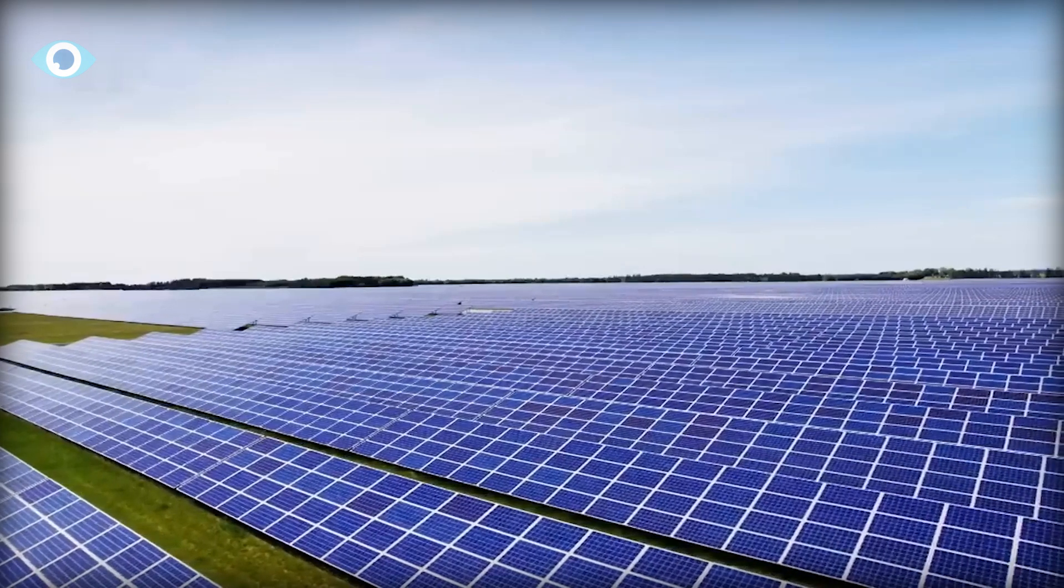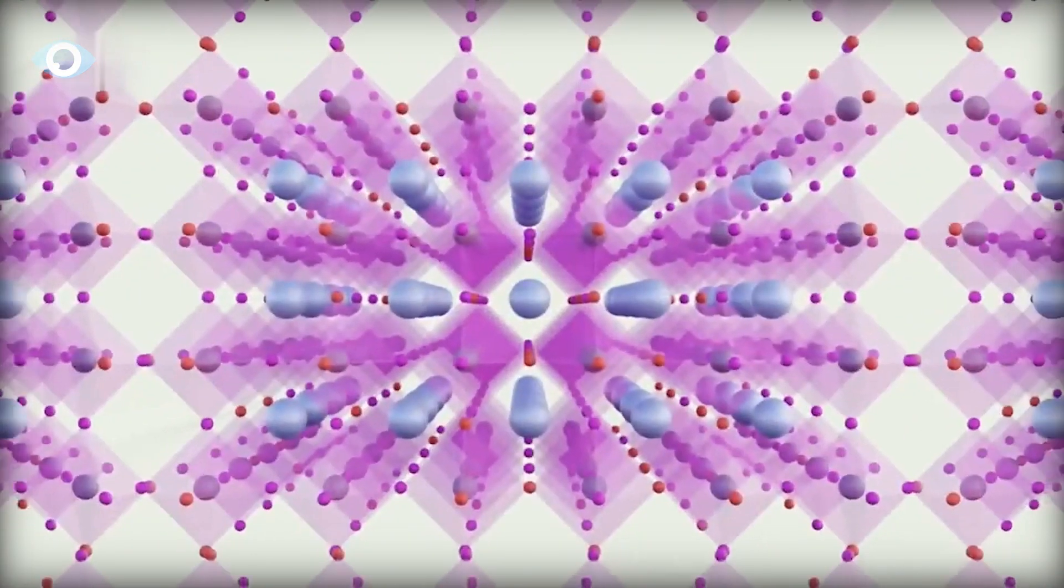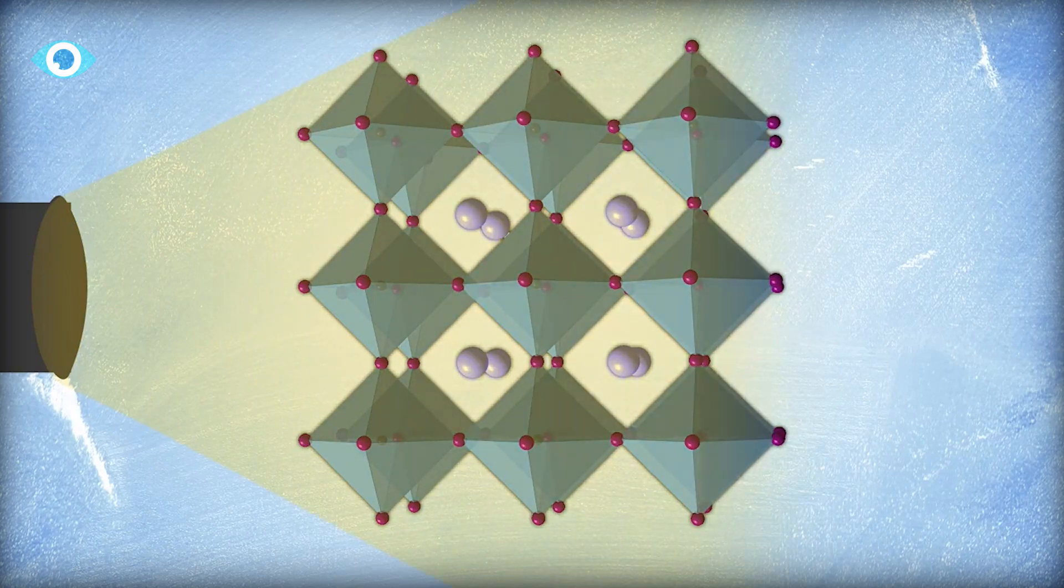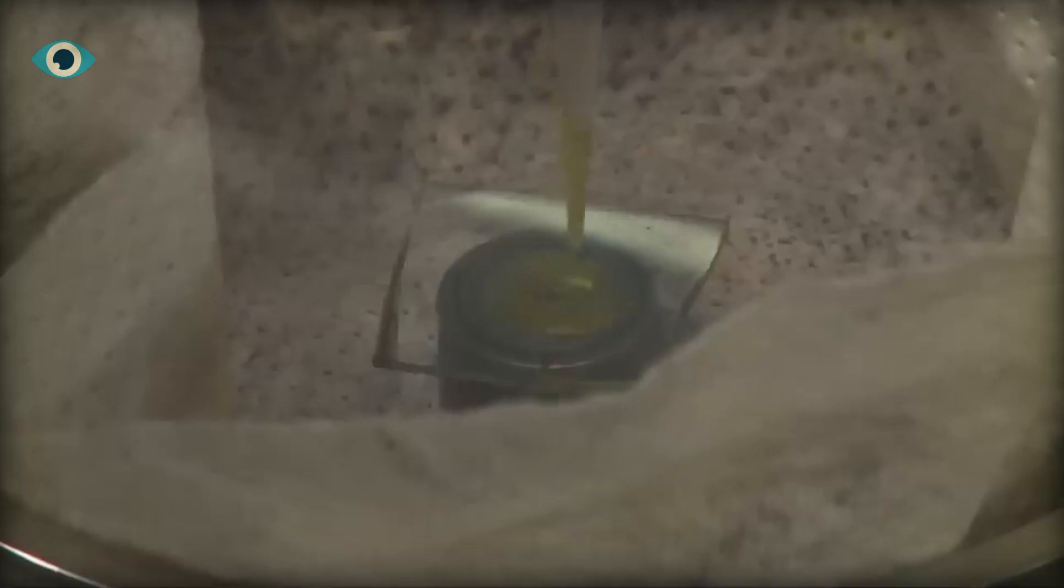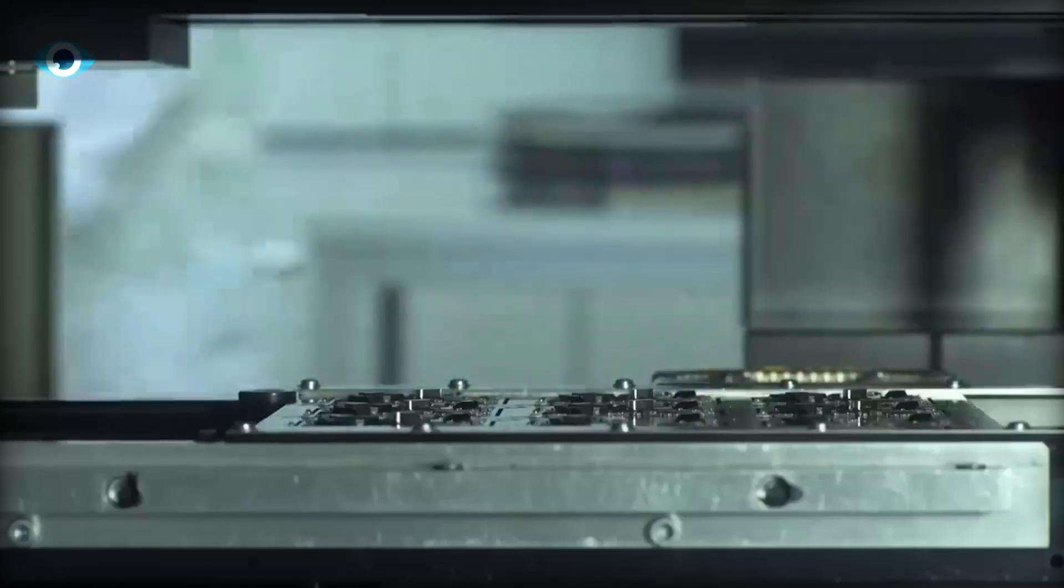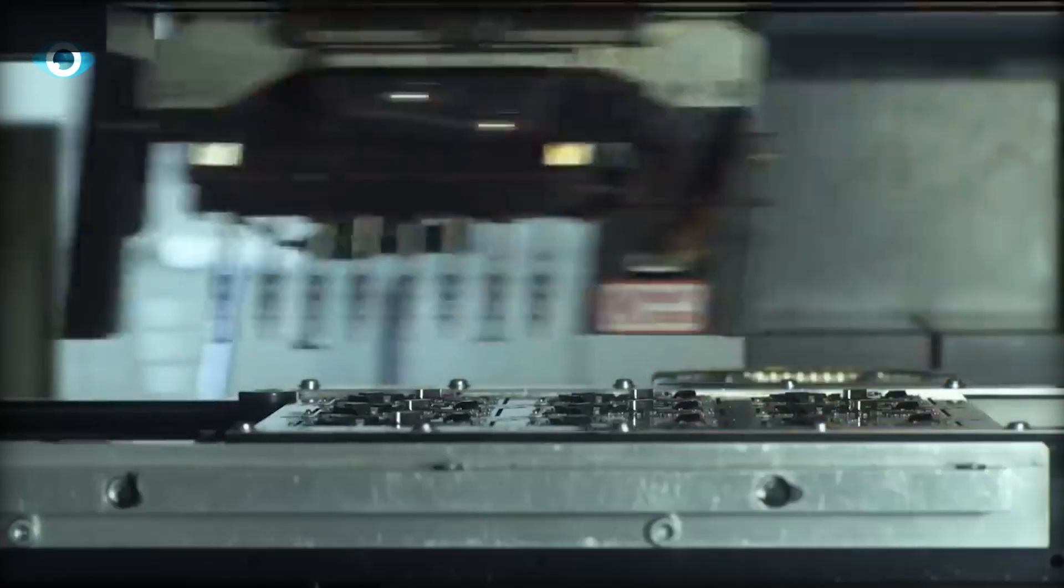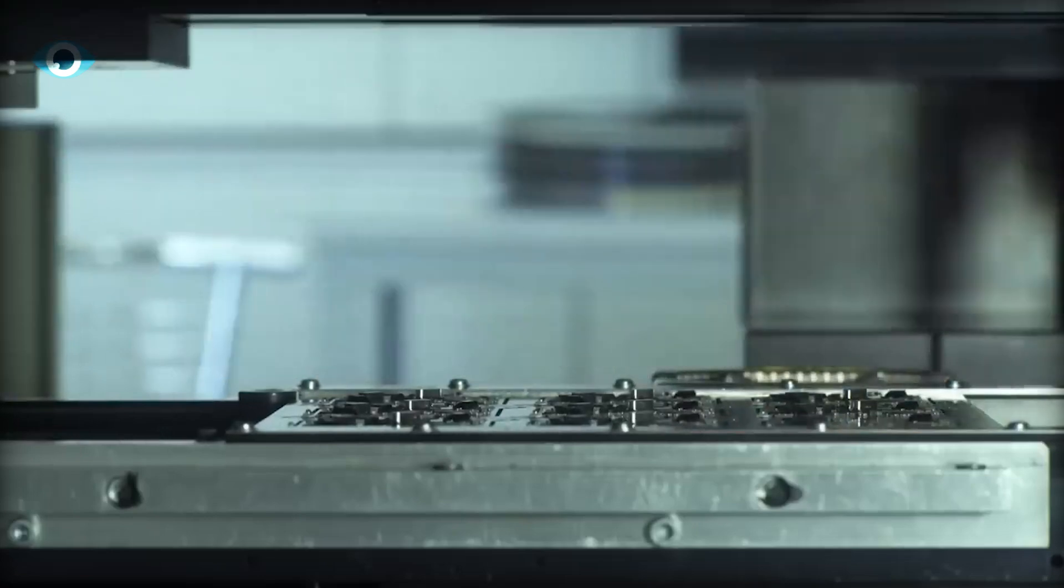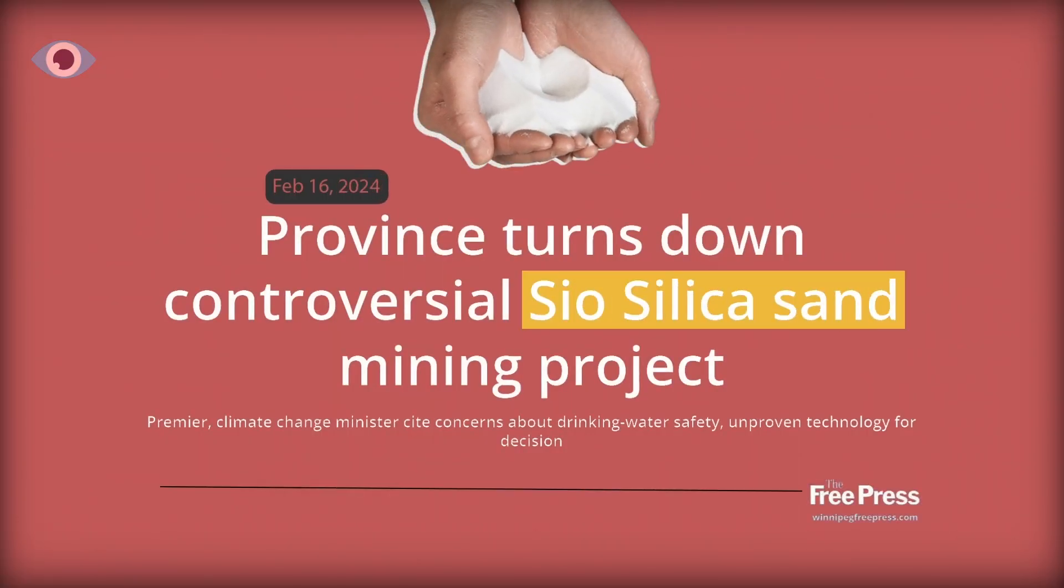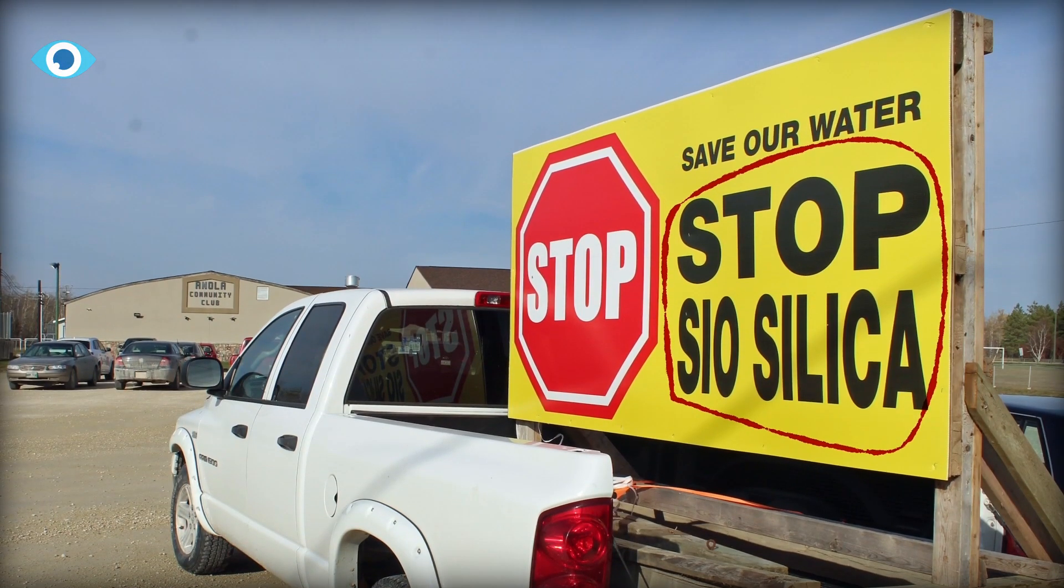Unlike their silicon counterparts, perovskite solar cells boast a unique molecular structure that enables them to capture sunlight more efficiently. With the ability to be synthesized at room temperature using readily available materials, perovskite represents a leap forward in sustainable energy production, minimizing environmental impacts such as silicon mining and other harmful practices associated with traditional solar cell manufacturing.